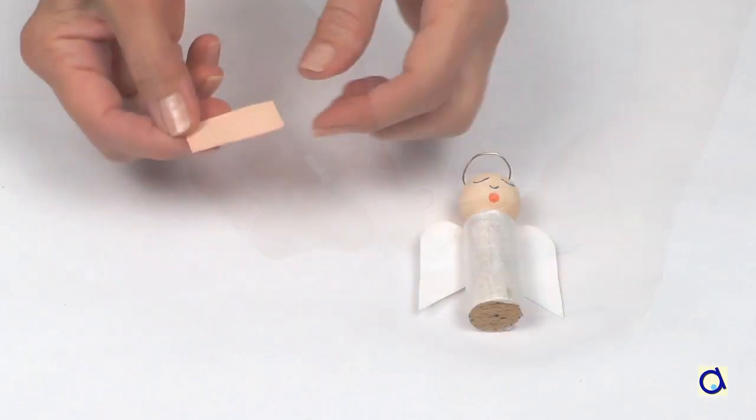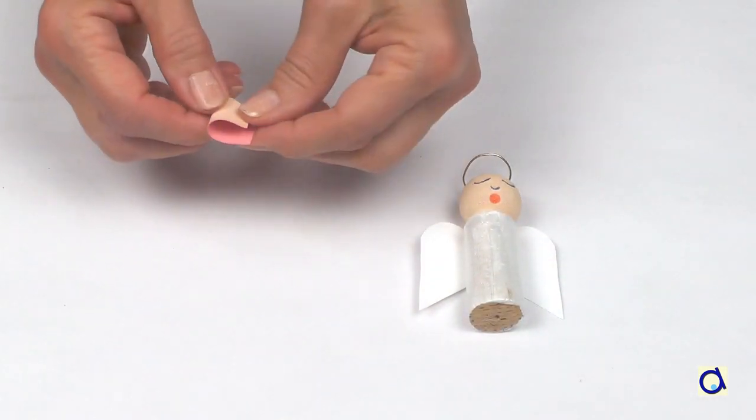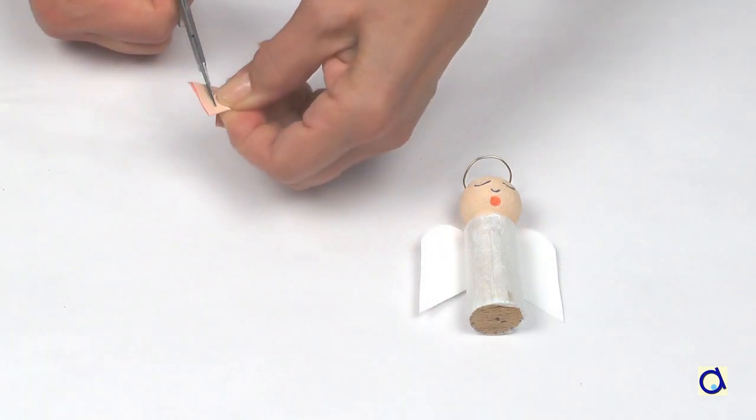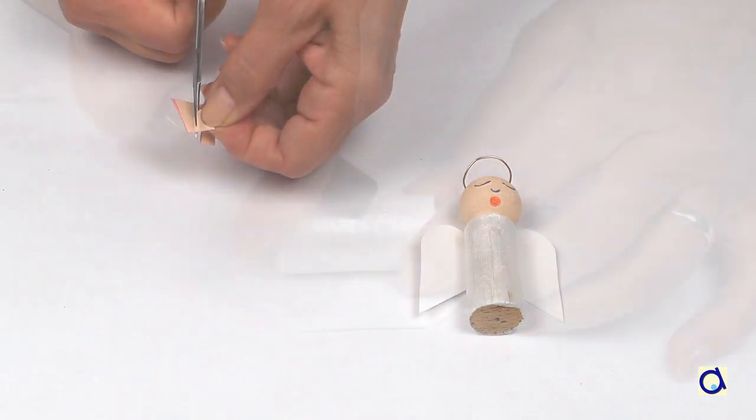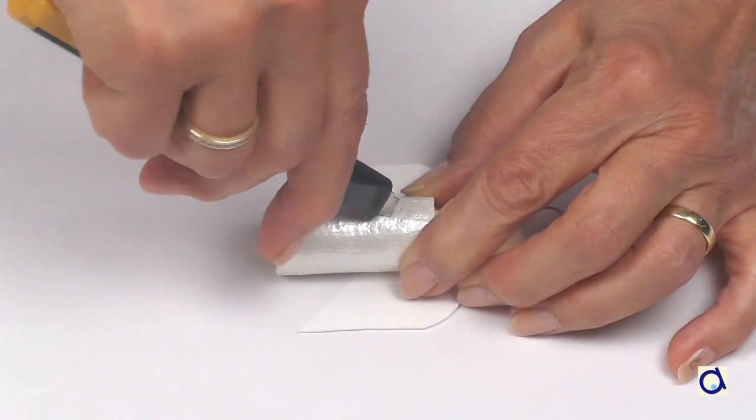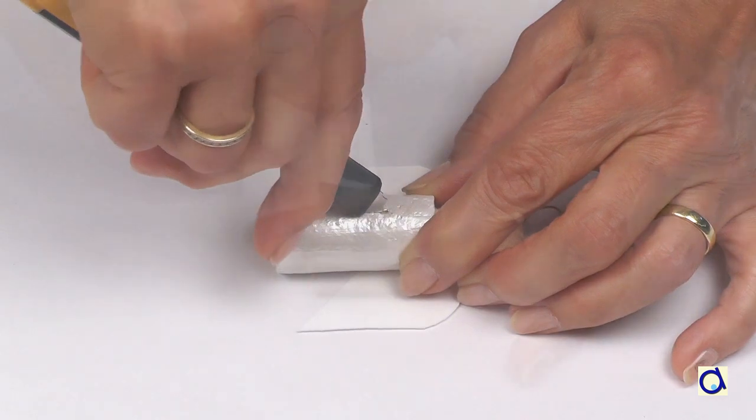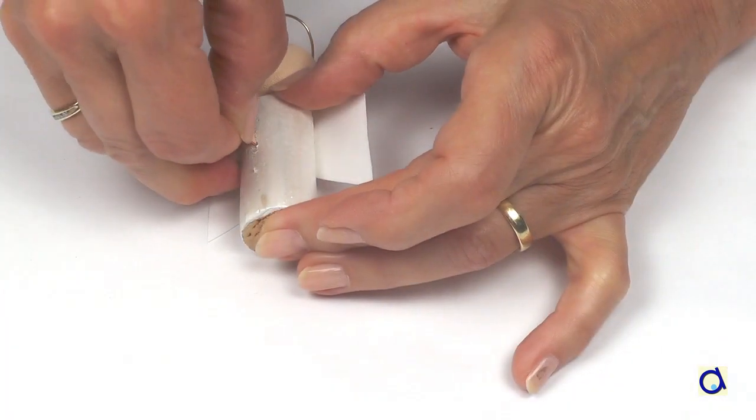Paint a piece of construction paper in skin colour. Fold it in half and cut out the angel's hands. Place the angel on its back and make a slit in front of the angel with an X-Acto knife. Glue the hands together in the slit.